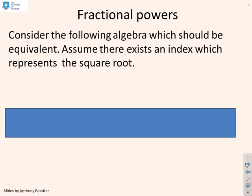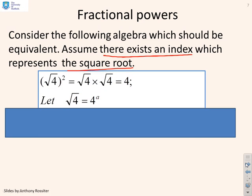Let's try it then. Let's assume there exists an index which represents the square root. So here we go. First of all the normal sum. The square root of 4 squared gives me square root of 4 times square root of 4 which gives me 4. That's fine. You're saying yeah that's the definition of square root, no problem. And now I'm going to assume that I can represent the square root of 4 with an index so I'm going to write it as 4 to the power a, which is what I've done there.